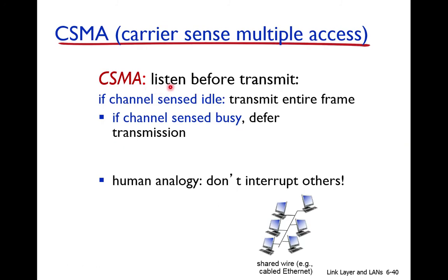Before transmitting, the node listens to the medium and transmits only if the channel is sensed idle. If the channel is busy, the node doesn't transmit. This means in CSMA there should be no collision because the node transmits only when the channel is idle. But in CSMA, collision is still possible, as I have explained through an example: this node and that node both sense the medium at the same time and find it free.